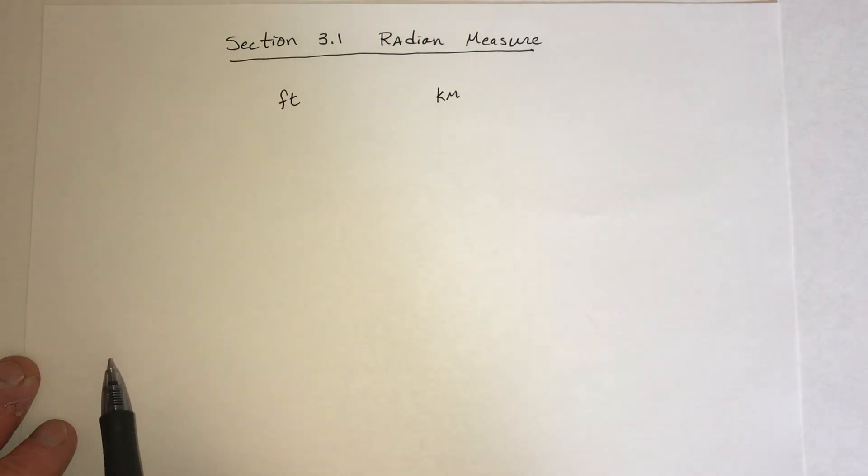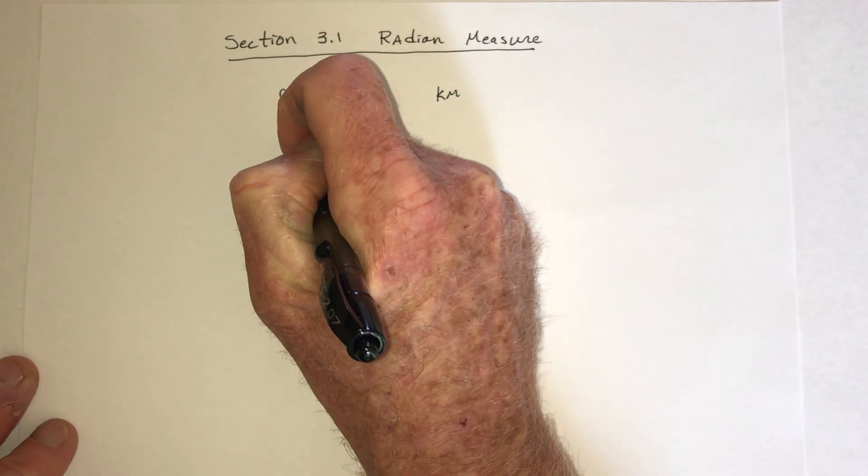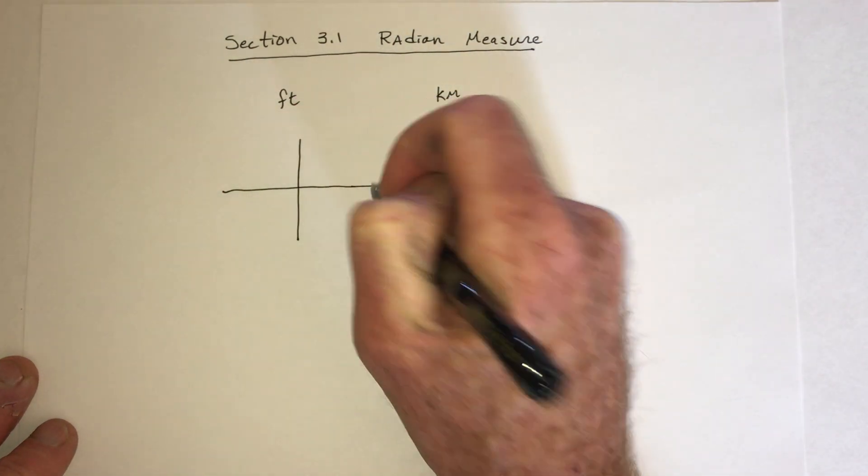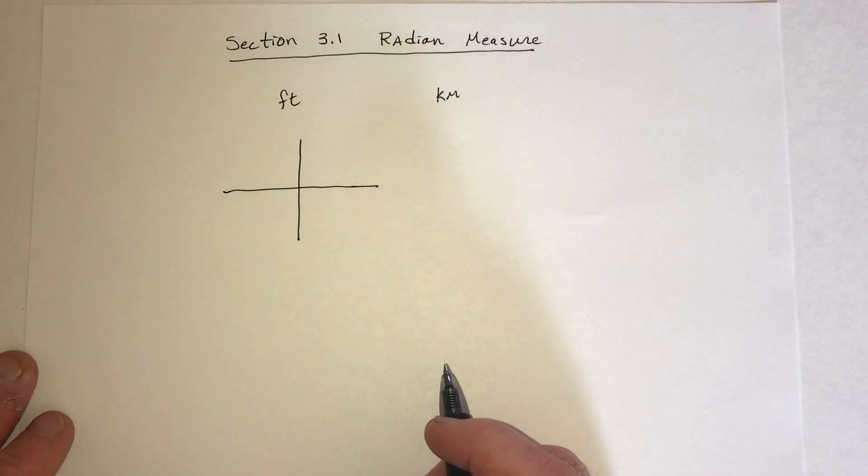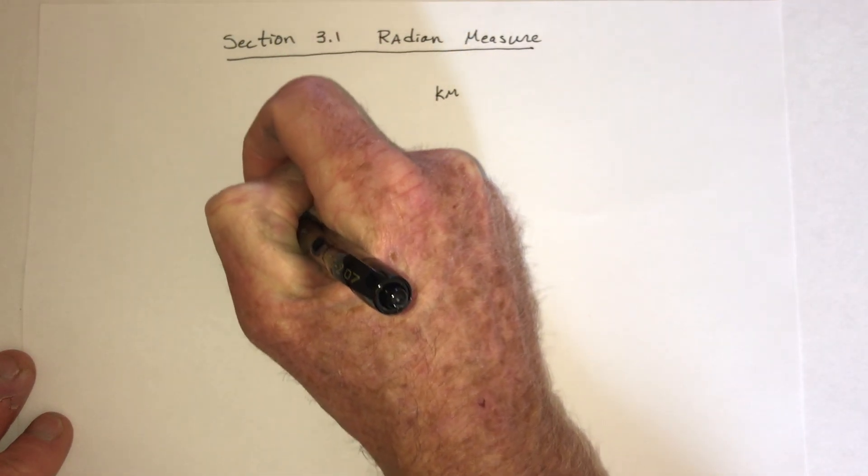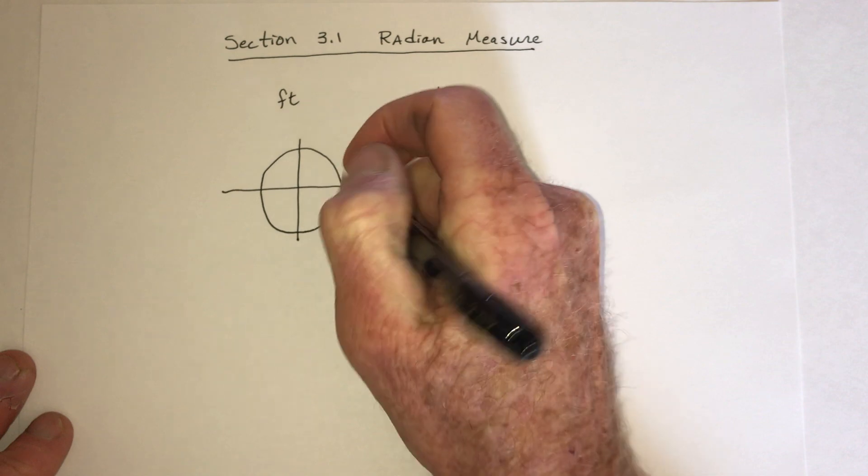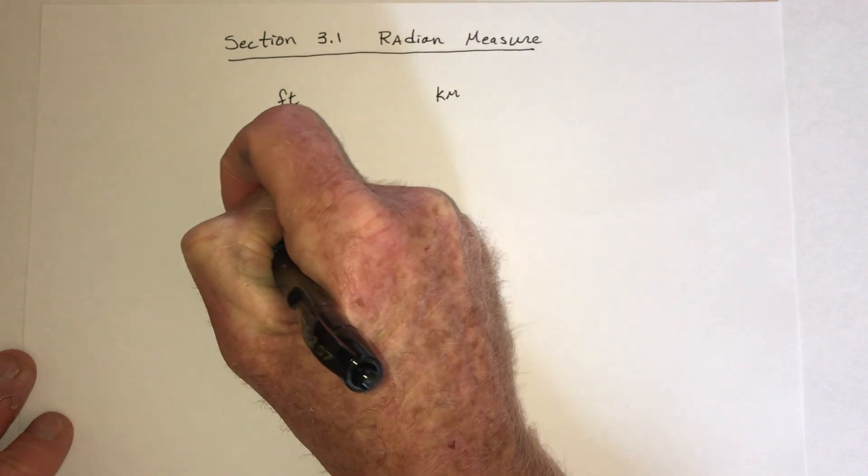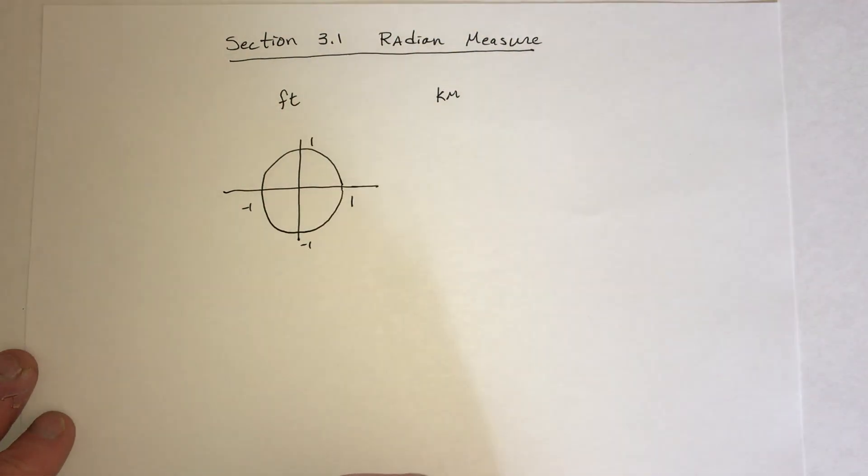Well, the same thing happens with angles. You can measure angles in degrees. You could also measure them in radians. Here's where radians comes from. Suppose that you have a circle with the radius of 1. Okay, there's circle, radius 1.